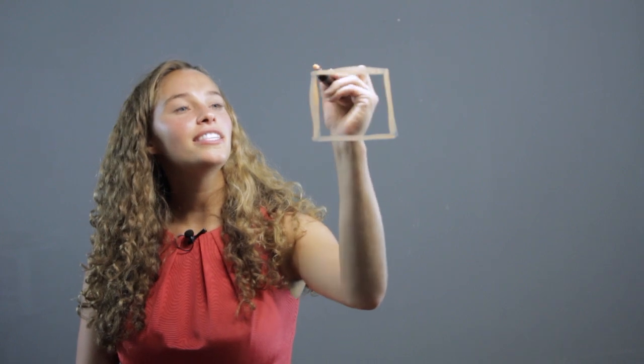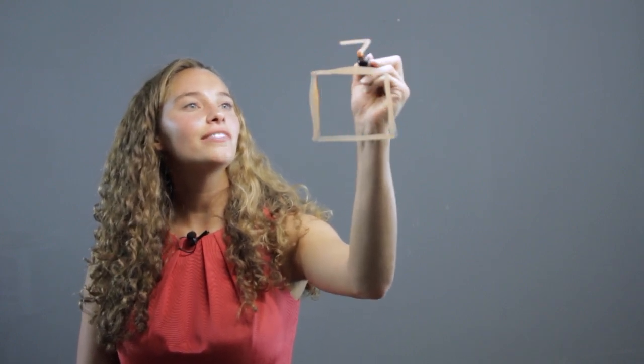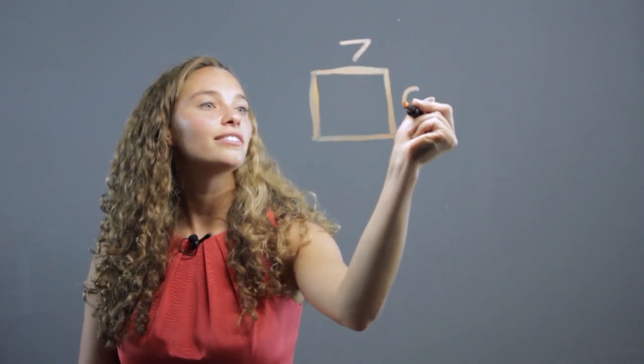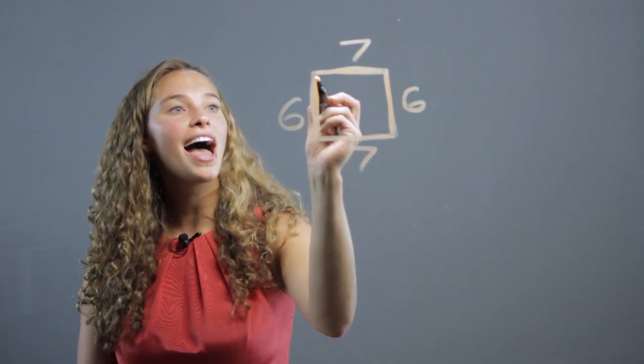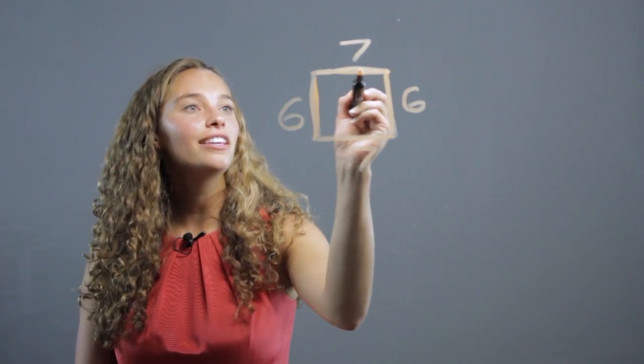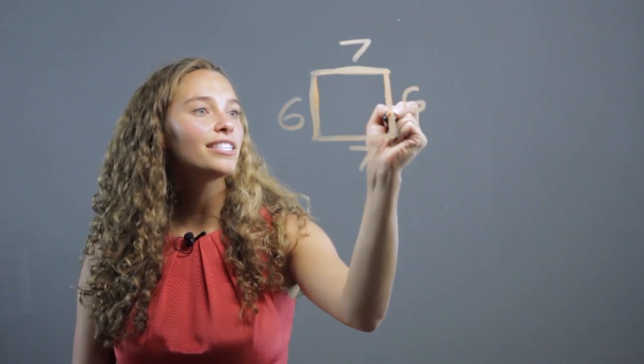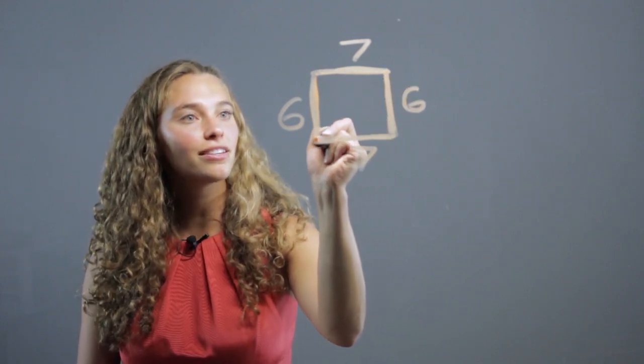So say this part is 7, let's call this 6, this is 7 and this is 6. You have them add up this side: 7 plus 6 plus 7 plus 6.